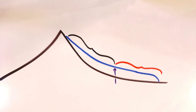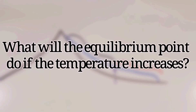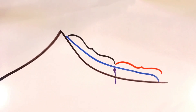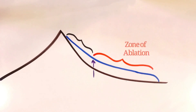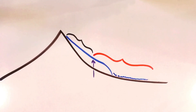What do you think will happen if the average air temperature increased? What will the equilibrium point do if the temperature increases? If the temperature were to increase, the equilibrium point would move uphill, because the zone of ablation expands and melts the glacier more quickly. In this situation, the glacier is likely to retreat. And if the equilibrium point backs far enough up the mountain due to a warming climate or reduced snowfall, the glacier can reach the point where the whole thing is contained within the zone of ablation. This is very bad for the glacier, because unless there's at least a small zone of accumulation, the glacier will melt away and disappear entirely.